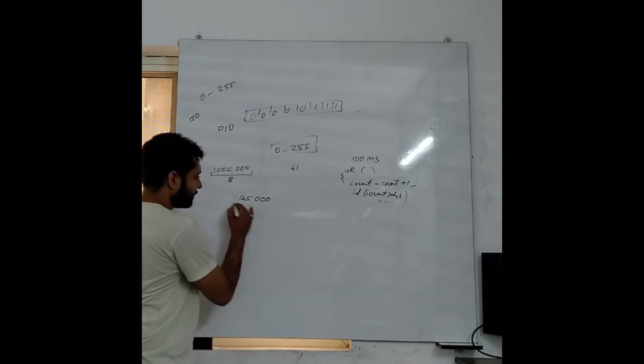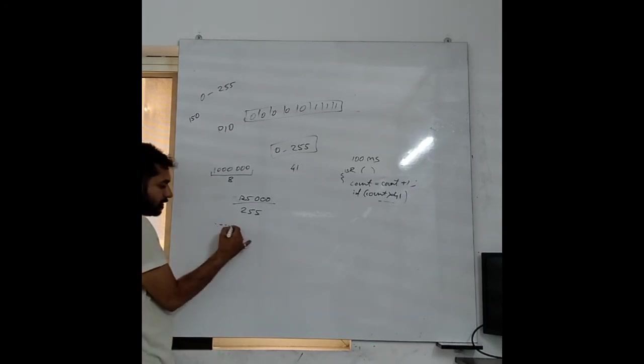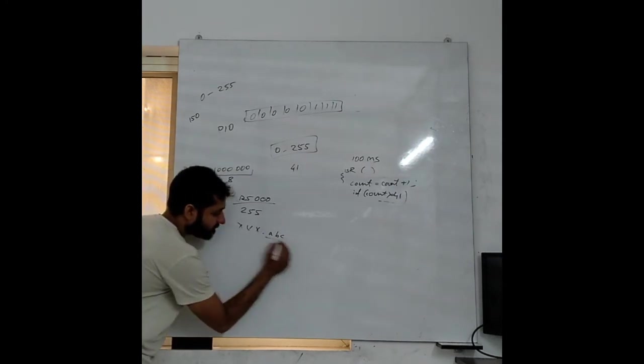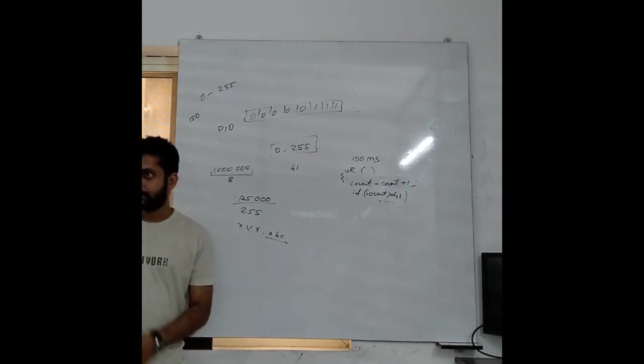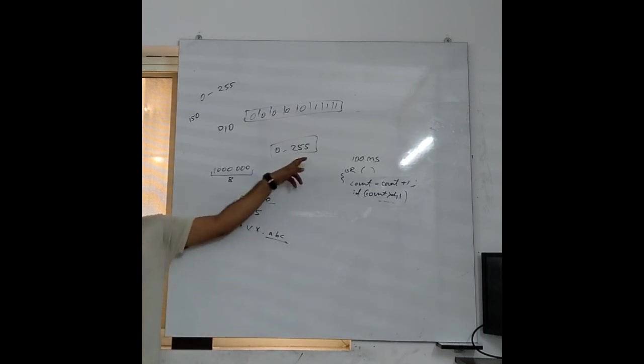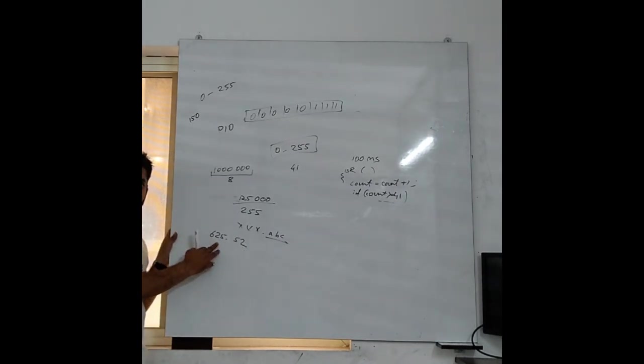So now if you divide this one by 255, you will get the number of steps that you need. So this might be something, some value, I have dot abc suppose. Now this is the error that I have. So I am saying that exactly when this much steps I get, I will say that one second has passed. But my counter can take, this register can count only integral steps. So let's say I get 625.52. So I can count 625, but I cannot count 0.52. So this one is the error. So always select a prescaler that will reduce this much, as much as possible.